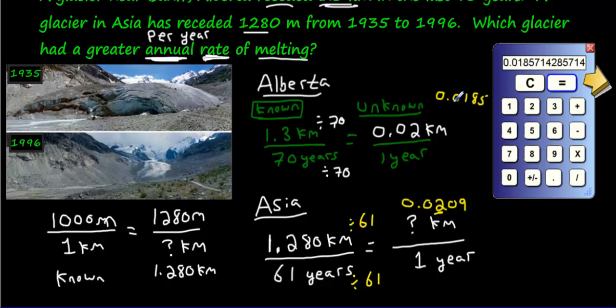Which is greater? This one is greater. 0.0209 is bigger than 0.0185. So the one in Asia is melting faster.